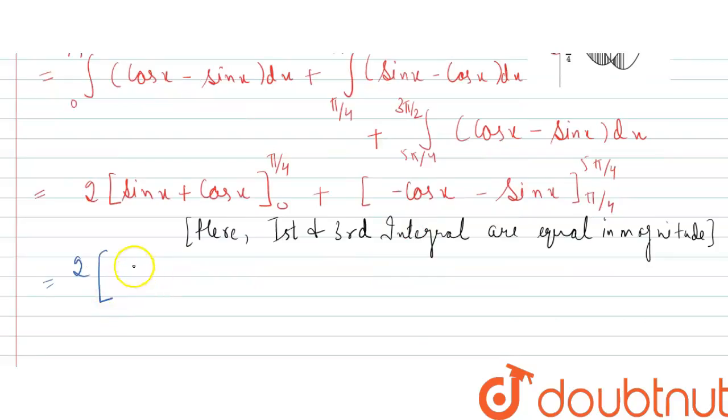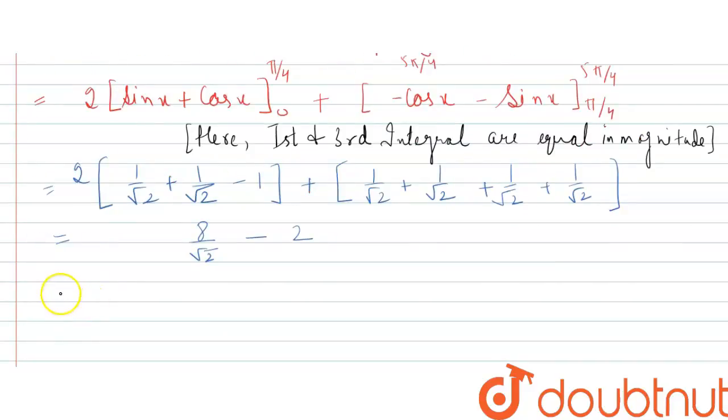Put these values. This gives 1 upon under root 2 plus 1 upon under root 2, and after evaluating, the area becomes 4 under root 2 minus 2.